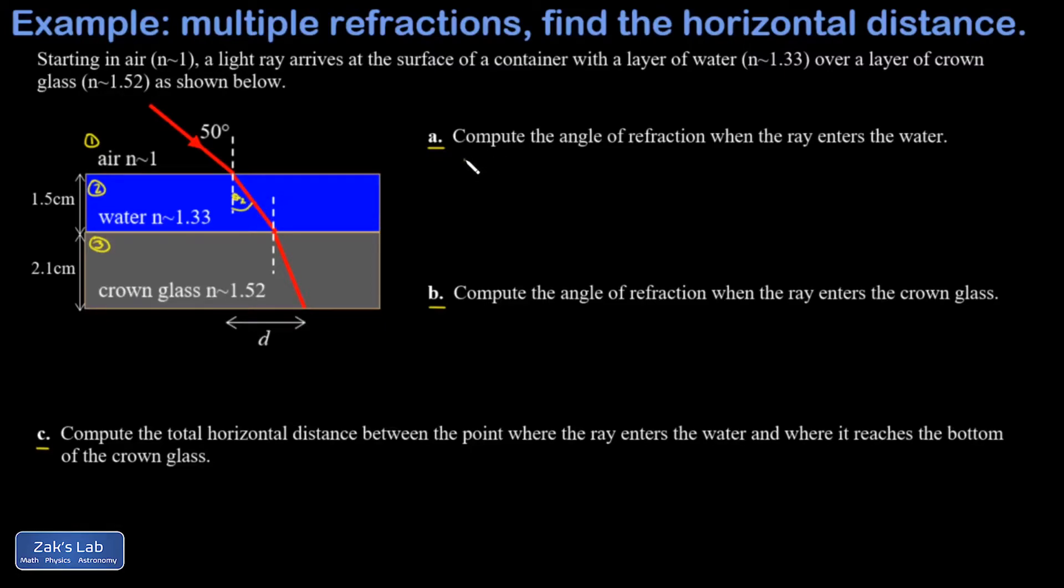We apply Snell's law: n1 sine theta 1 equals n2 sine theta 2. We plug in n1, and the index of refraction for air is approximately 1, and we have an incident angle here of 50 degrees. Remember that's measured with respect to the normal. And n2 is 1.33, the index of refraction for water.